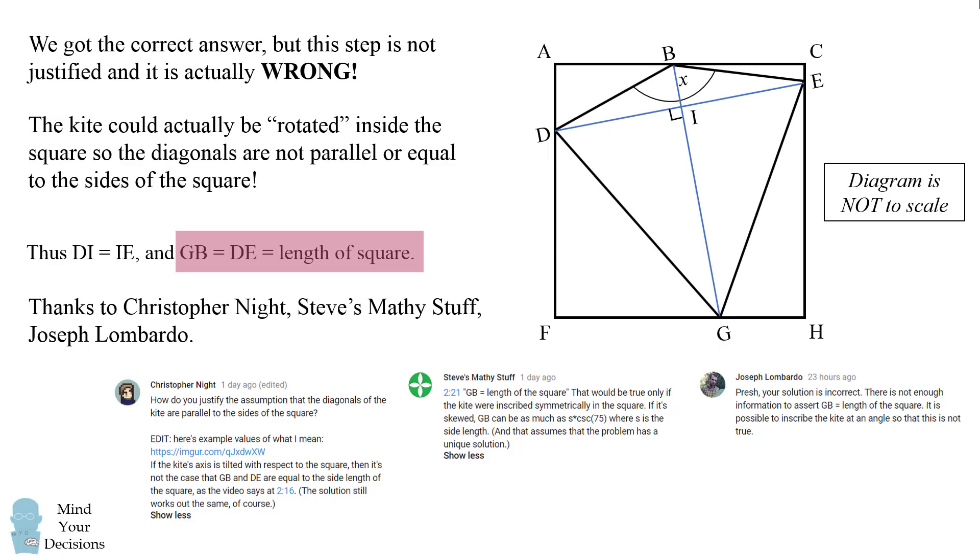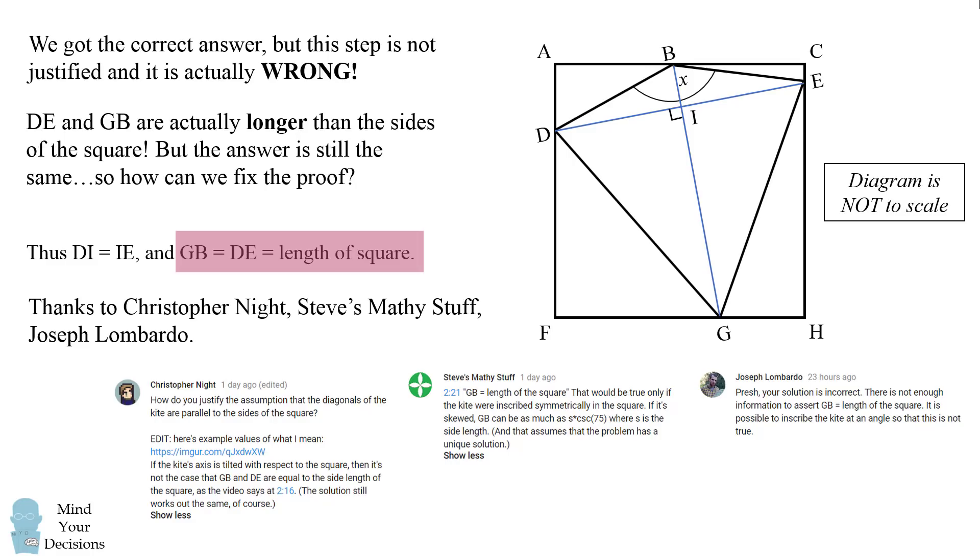He actually presented values and showed that the lengths of the diagonal will actually be longer than the sides of the square. So it is not in fact true that GB equals DE equals the length of the square if the kite is actually off axis. The more remarkable part is that even if the kite is rotated, it still turns out that X is equal to 150 degrees. So since the answer is still the same, how can we fix the proof to show that X is 150 degrees?